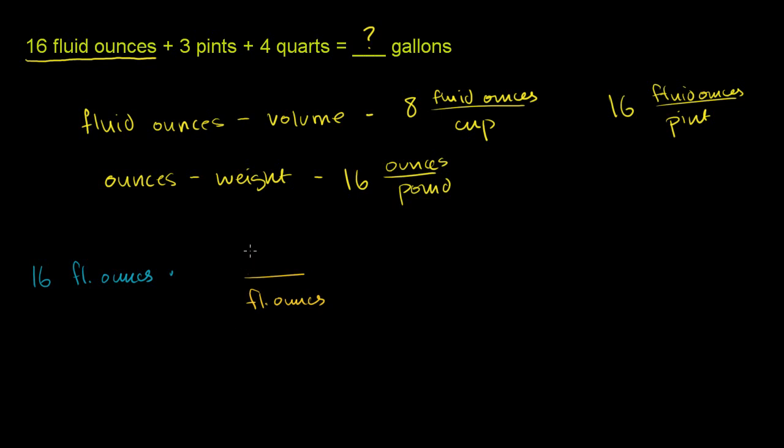So we want fluid ounces in the denominator. How many fluid ounces are there per pint? We want a pint in the numerator so that this and this cancel out. Well, there are 16 fluid ounces per pint, or 1/16th of a pint per fluid ounce. So 16 over 16 is equal to 1 pint. 16 fluid ounces is equal to a pint.